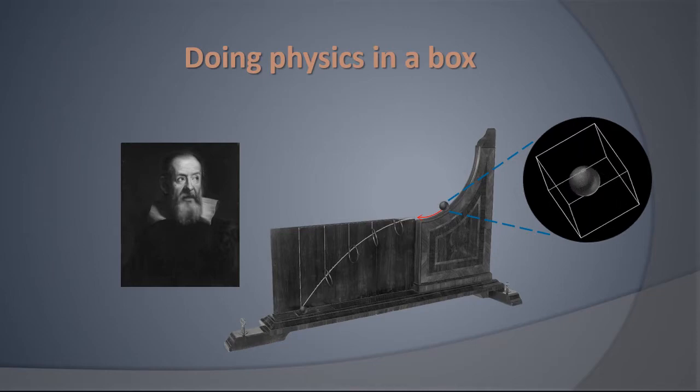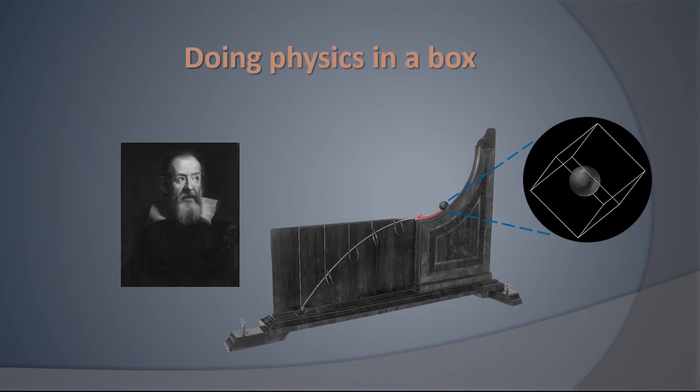Galileo's cut between target and subject side is what eventually enabled physics to portray nature in terms of lawful physical equations, like the law of fall for instance.